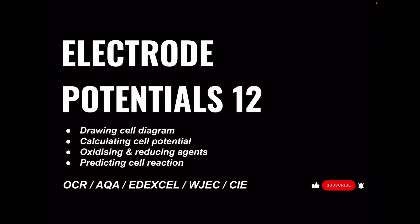Got another exam question walkthrough for A-level chemistry, this is number 12 in the electrode potentials playlist. It covers drawing a cell diagram, calculating a cell potential, oxidizing and reducing agents, and predicting a cell reaction. Questions suitable for all of the major exam boards. I hope you like the video, and if you haven't already subscribed, please think about subscribing, it really helps me out. As always, the link to the questions in the description of the video if you want to try it first.